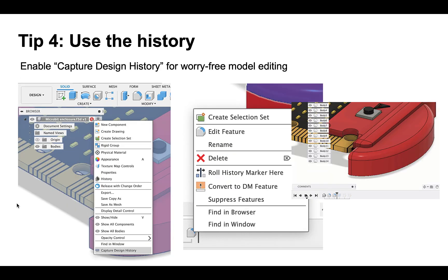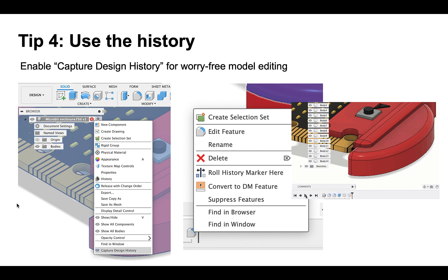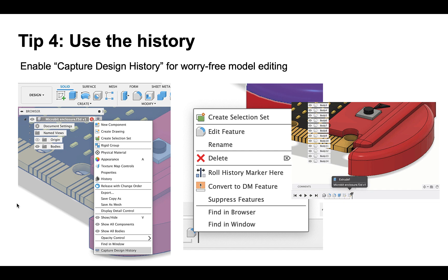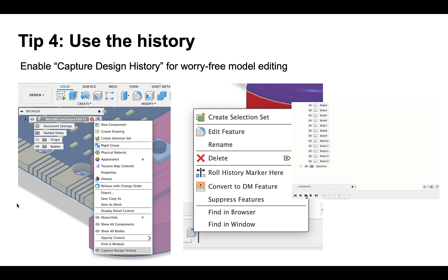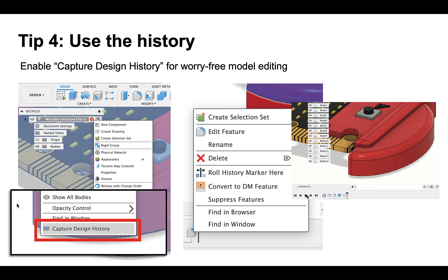Another tip is using the history from Fusion 360. When you send something to Fusion 360 from Tinkercad, the history will be off by default, so if you don't know about it you might never use it and you're missing a lot. The first thing you have to do is in the object browser, click on Capture Design History. This is like a super undo — if you enable the history on the timeline, you can go back to something you did a long time ago, make a change, and the design will adjust accordingly. So remember: Capture Design History at the very bottom of the object browser.